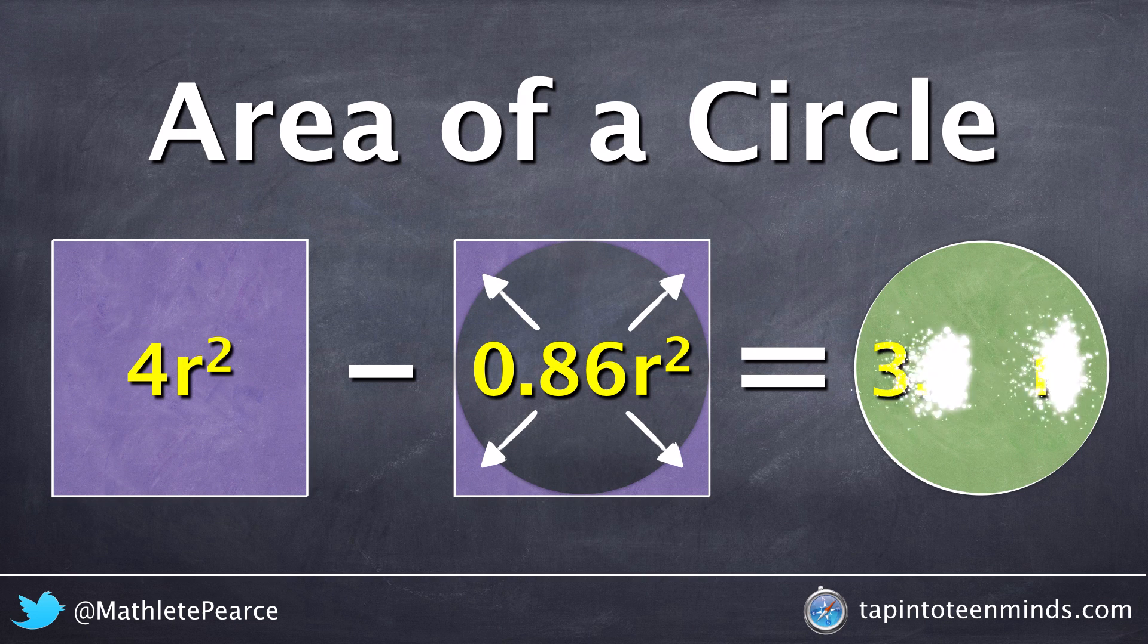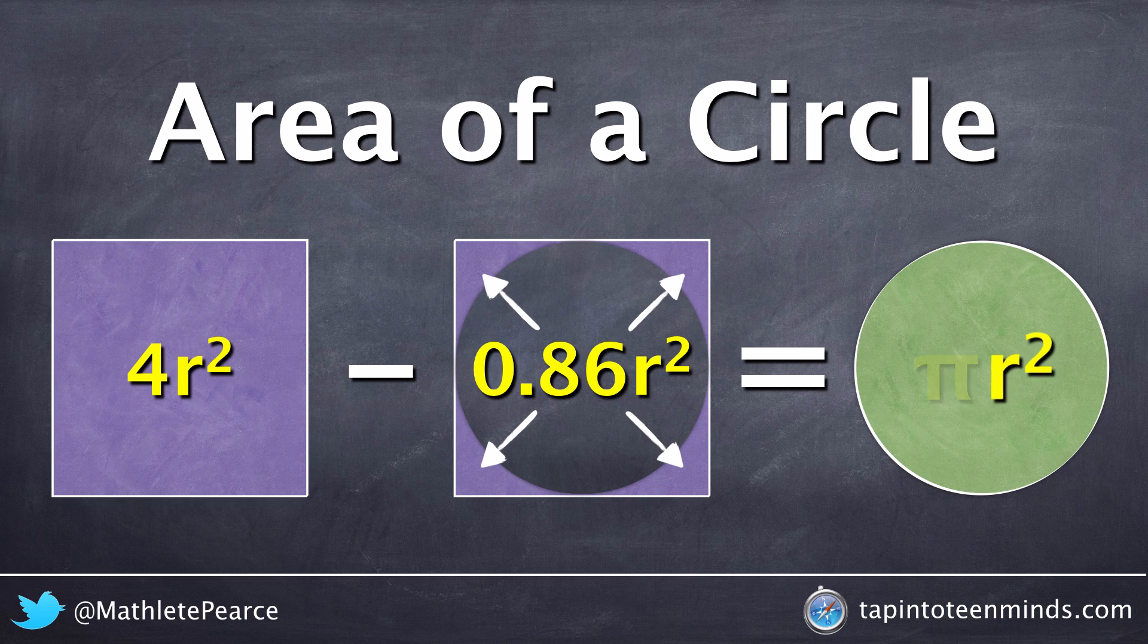4r squared minus 0.86r squared, we end up with 3.14 times r squared, which is ultimately pi r squared.